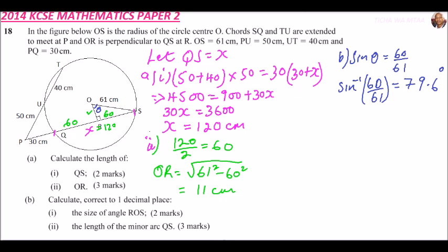Finally, we have Part B, Roman numeral two. We are required to find the length of the minor arc QS. The minor arc, not mirror, this is a minor arc.